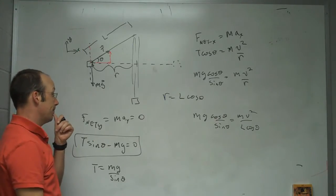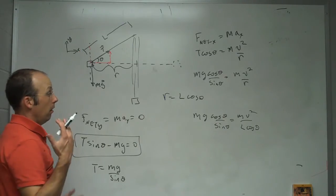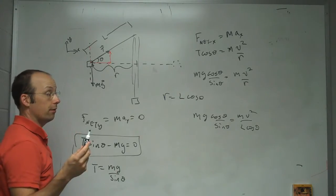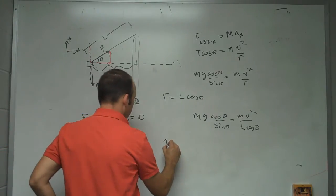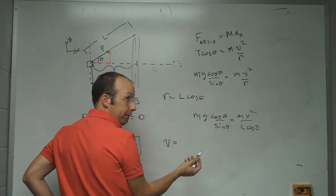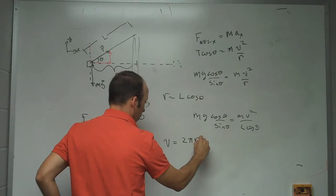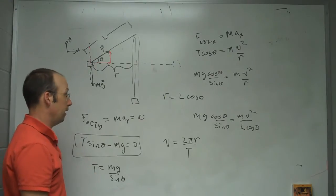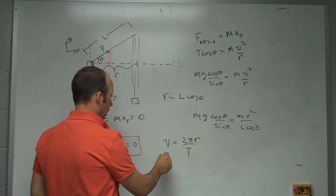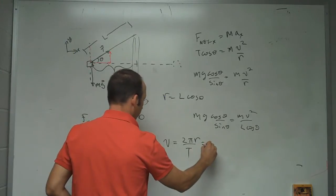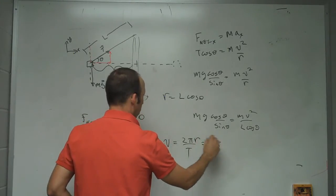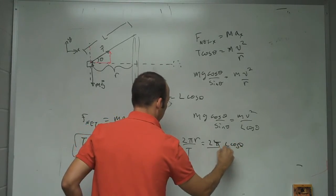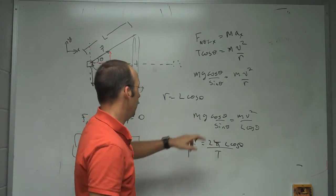And, the other thing I need to get rid of is v. Because, I'm not going to measure v. What I'm going to measure is the period or how long it takes to go around once. So, if I look at v equals, how far it goes, which is going to be 2 pi r, over how long it takes, which is the period. But, I just said r is that. So, I get v equals 2 pi r is l cosine theta over the period T.